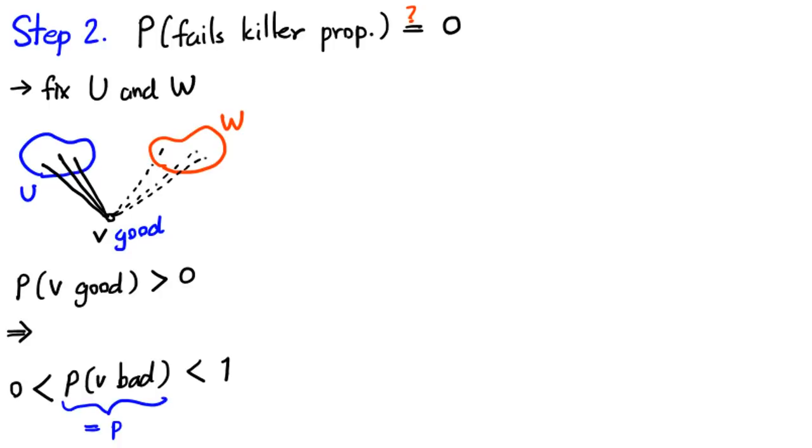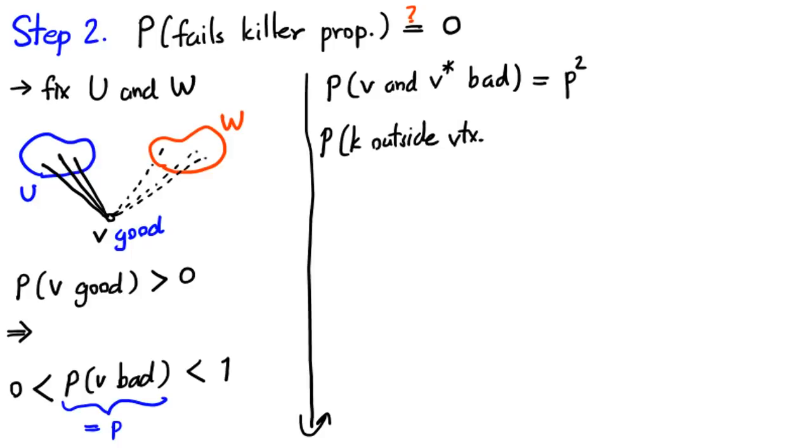You can easily work out the exact value of p, but all you need is the fact that it is positive and is less than 1. Now, if we have another vertex v star outside of U and W, the probability that both v and v star are bad is p squared, since these events are independent. In general, if we have k vertices outside of U and W, the probability that all of them are bad is p to the power of k. However, since p is strictly between 0 and 1, this number tends to 0 as we pick more and more vertices.